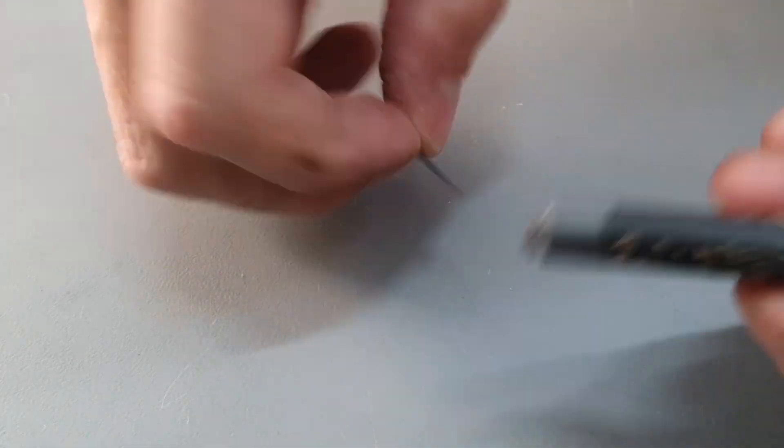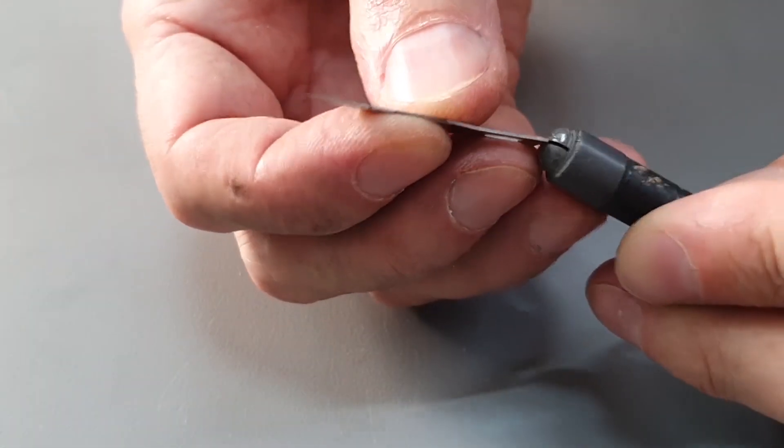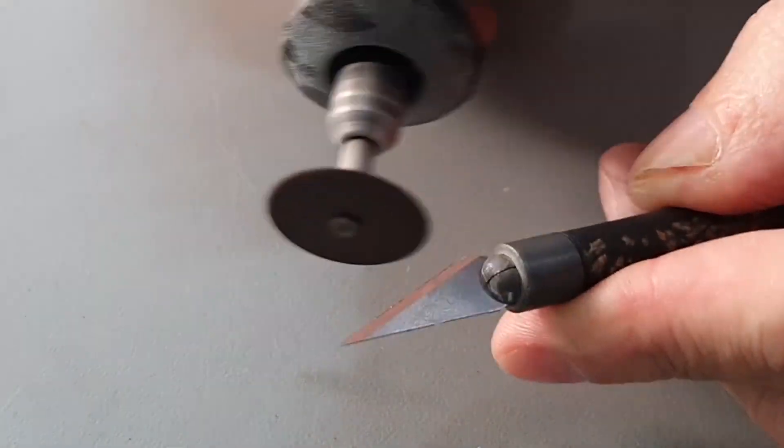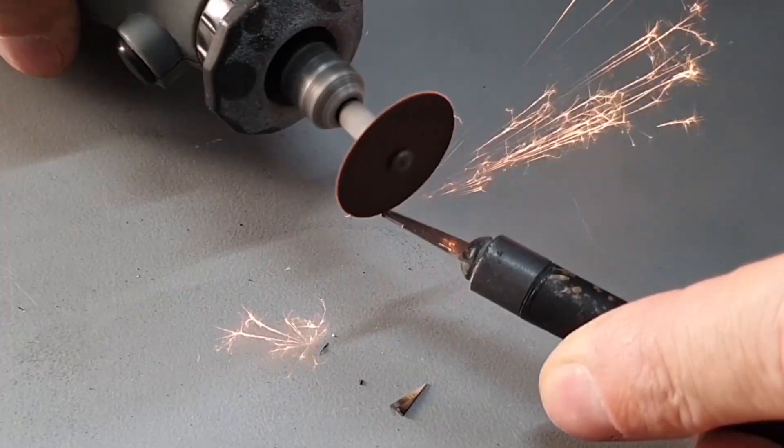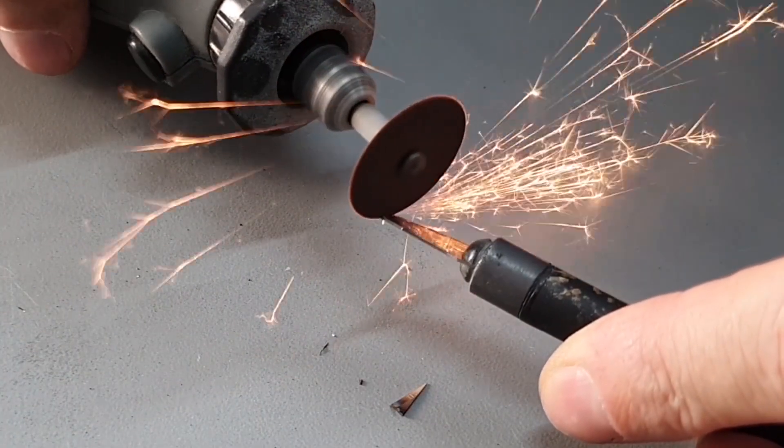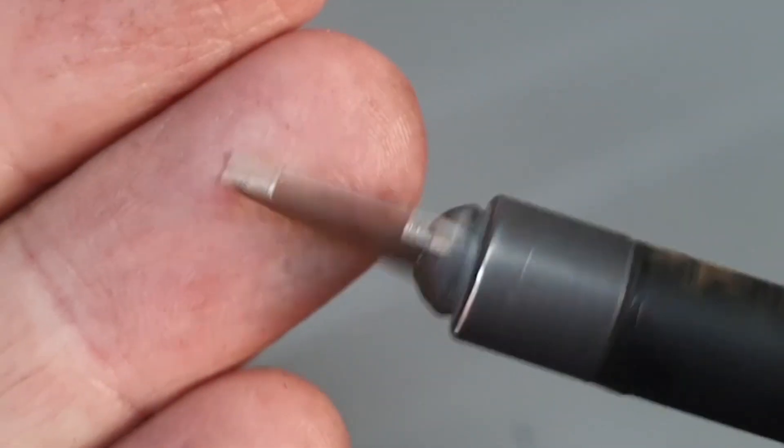Let's take a dirt cheap and ubiquitous X-Acto blade and transform it into an awesome specialized tool. Take your Dremel tool and grind the sharp side down completely dull. Cut off the tip at an angle. Your blank should look like this.